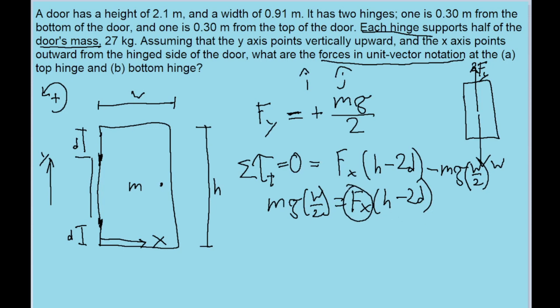And this horizontal force, the force from the bottom hinge, that's one of the forces we want to find. So let's solve for F sub x by dividing both sides of that equation by h minus 2d. And now we have this horizontal force representing the force from the bottom hinge on the door. So if we were to put our numbers into a calculator for here, whatever this is would be what we'd use for the x component for the bottom hinge.